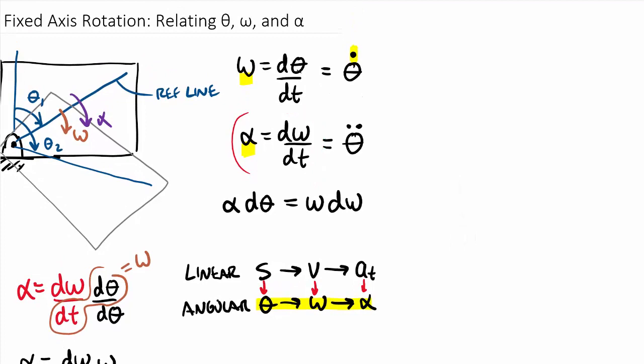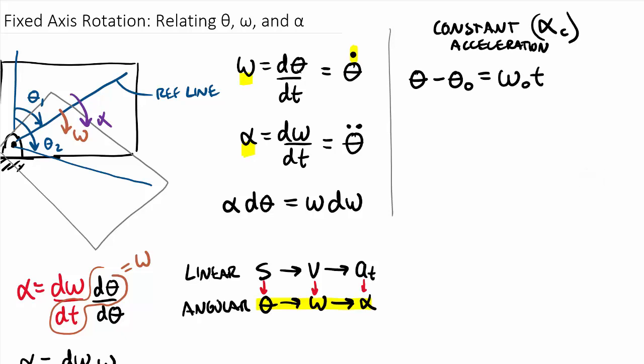So coming back up top here, we have our third equation, alpha d omega equals omega d omega. And so if we take integrals of these equations, I think you'll remember that we can end up with a constant acceleration form. So if we end up with a constant acceleration sub c, then essentially, like I said, by starting with this equation here and working through our time derivatives, we can end up with the equation that theta minus theta naught, the initial value of theta, is equal to omega naught times t plus one-half of our alpha constant times t squared.